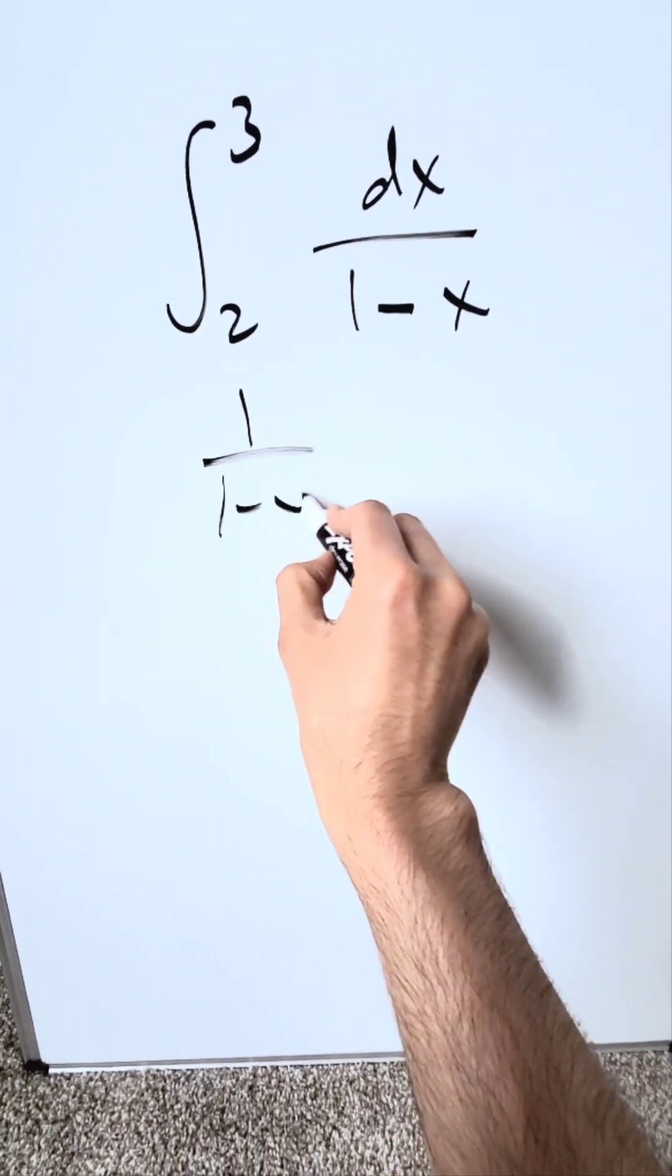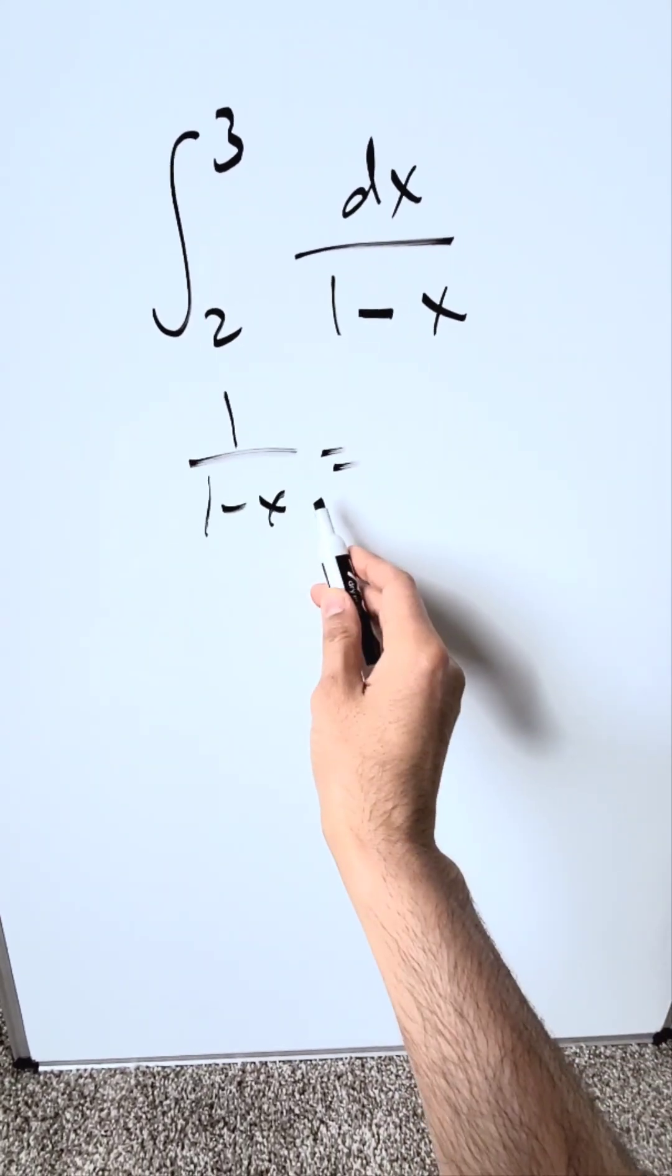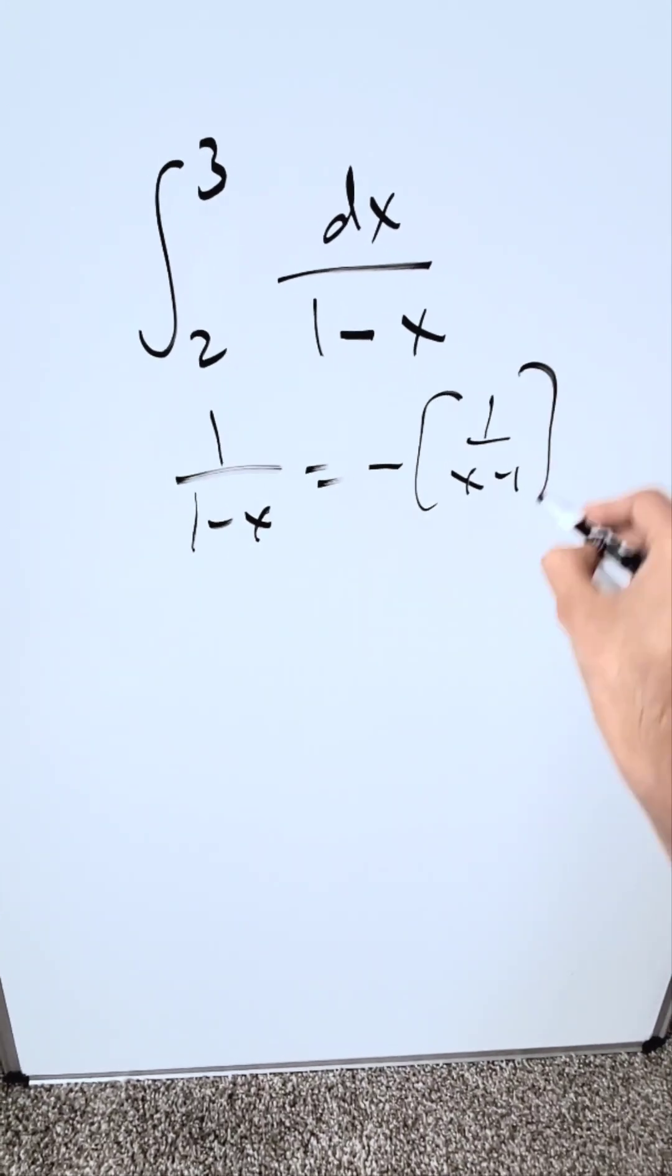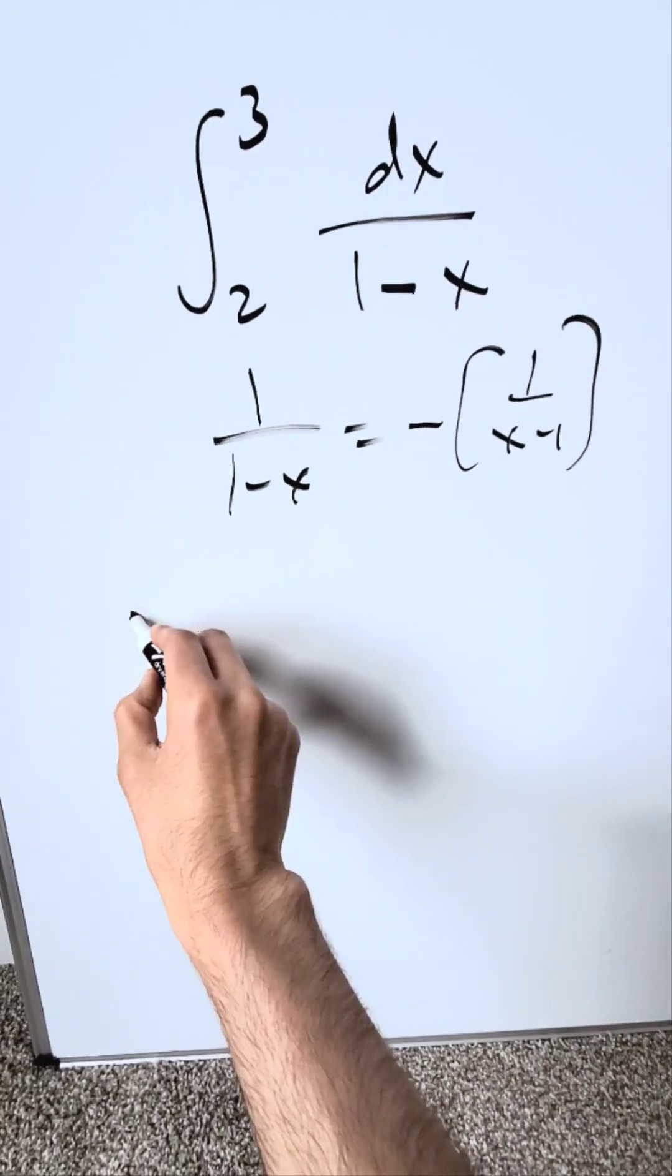You're looking at a function which is 1 over 1 minus x, but it can also be equivalent to a minus placed outside, 1 over x minus 1. And you want to do it in this way because it's easier.